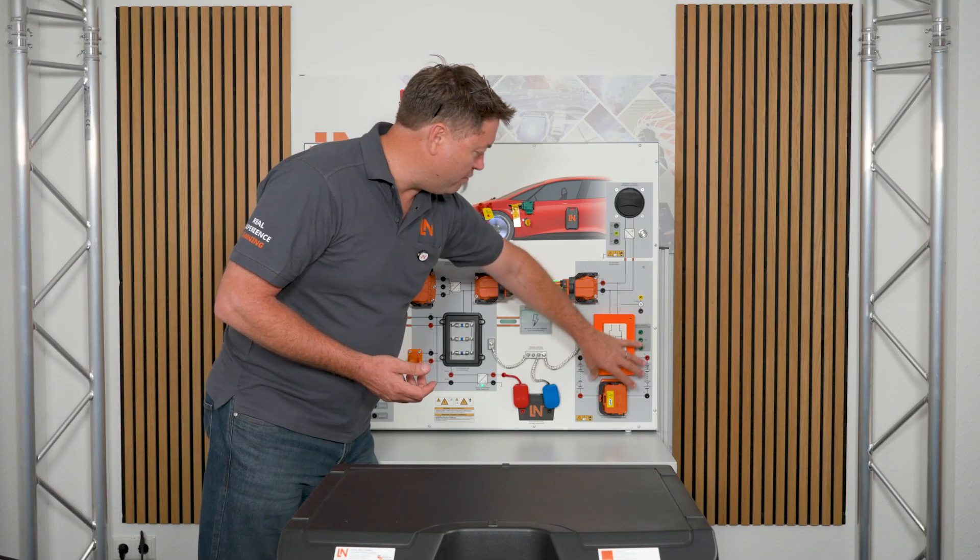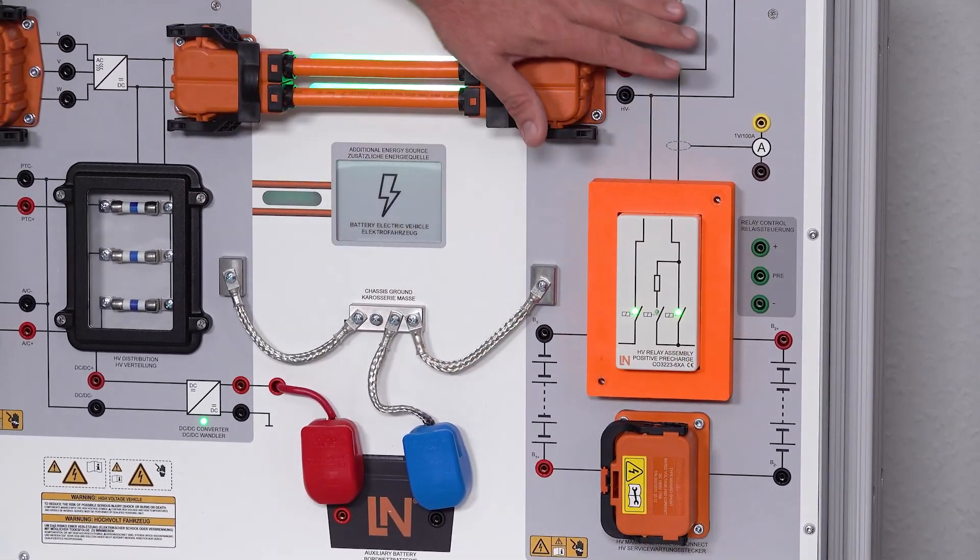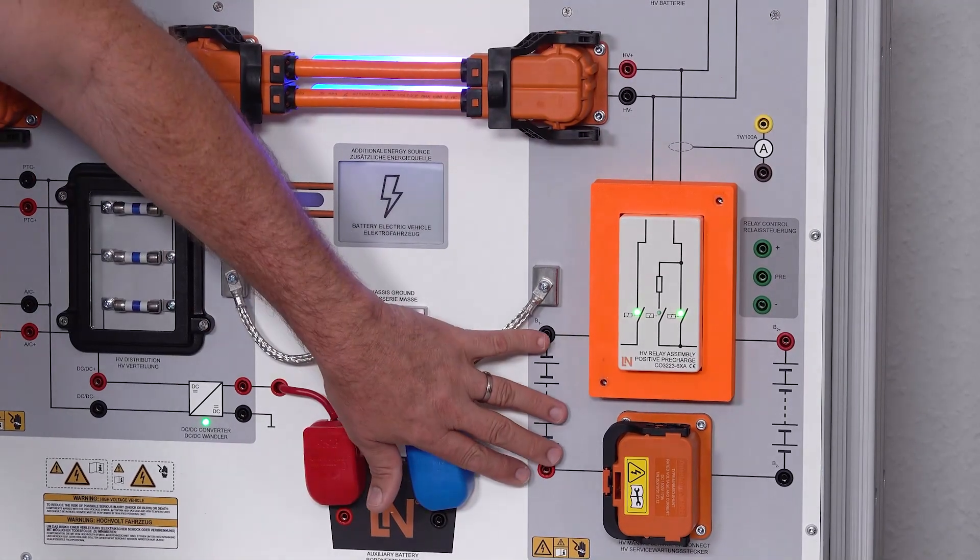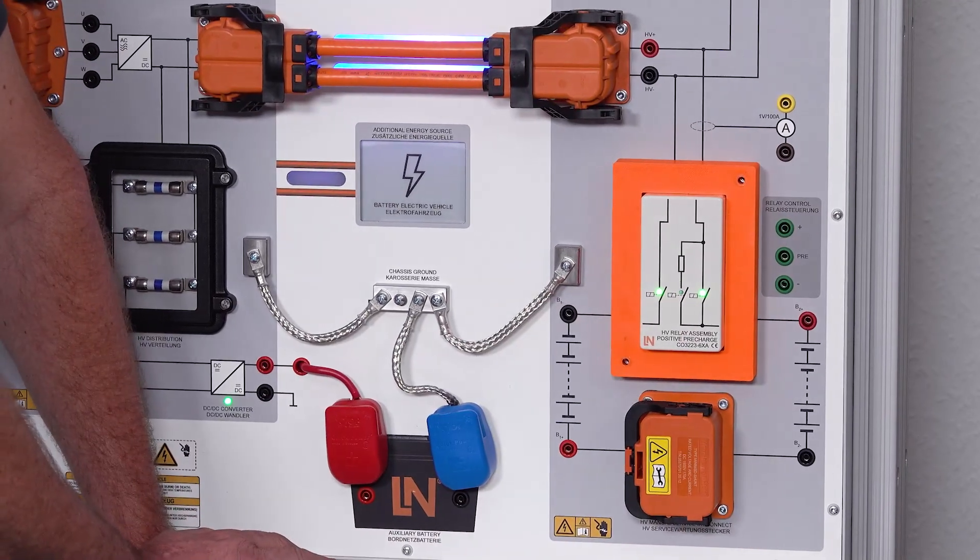If we have a look now at the various components that we have here, this side here is our high voltage battery. The high voltage battery is made up of the various modules of the battery. We've got a 400 volt battery.